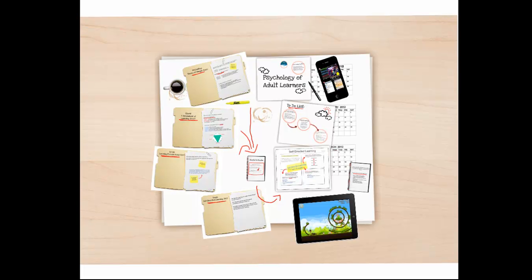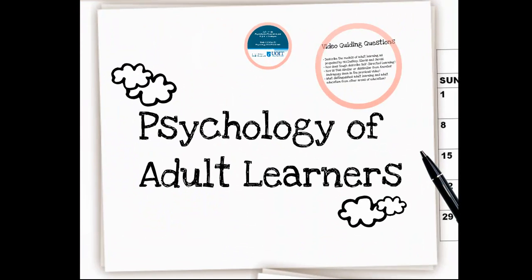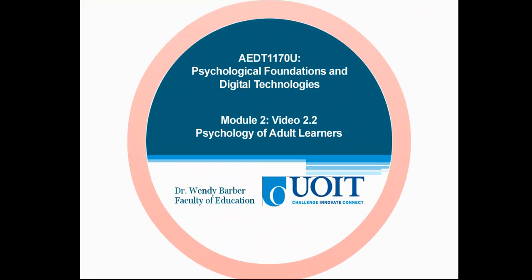This is AEDT 1170U Psychological Foundations and Digital Technology, Module 2, Video Clip 2.2, the second part of Psychology of Adult Learners. It's important to remember that there's no single theory of the psychology of adult learning that explains all of human learning. Instead, we have a number of different frameworks or models that help us understand how adults learn, and each of these frameworks contributes something to our understanding of the psychology of the adult learner. While andragogy, studied in the previous clip, is one of the major theories, today we will look at some alternate models.